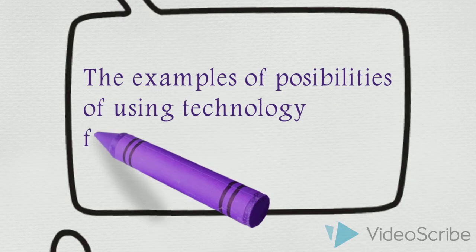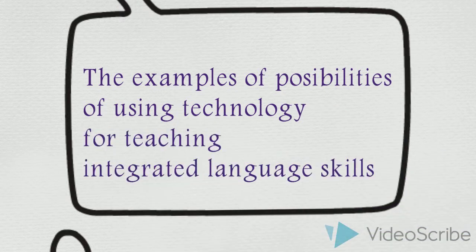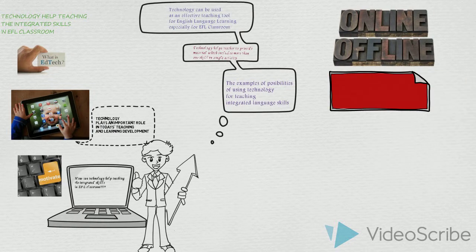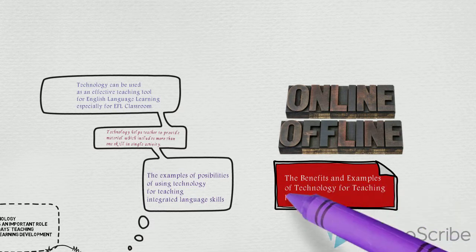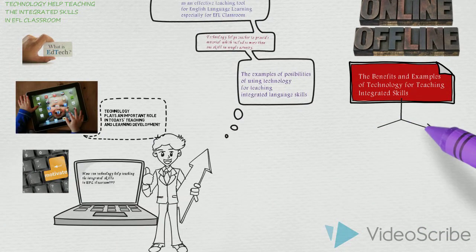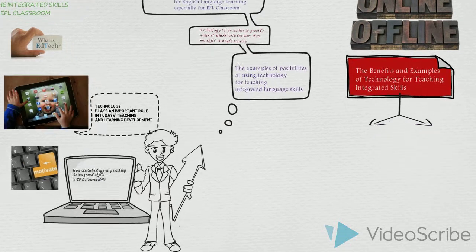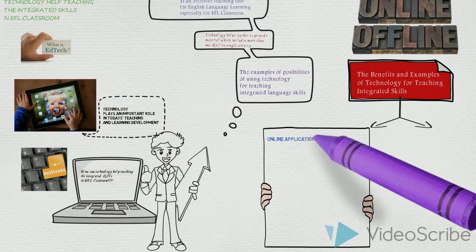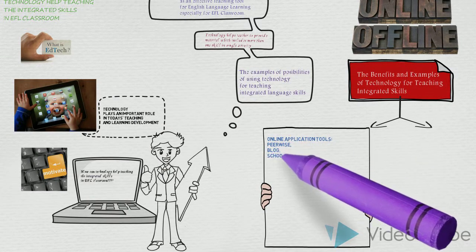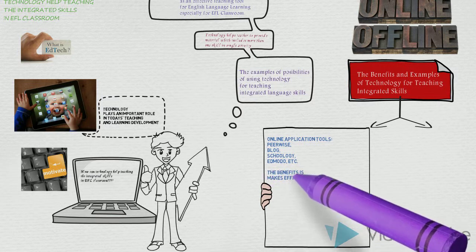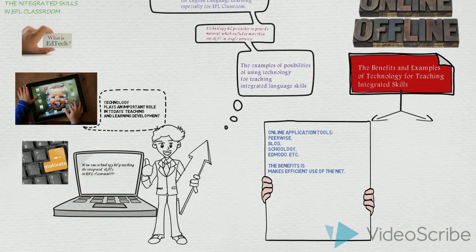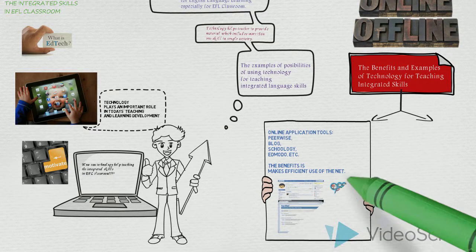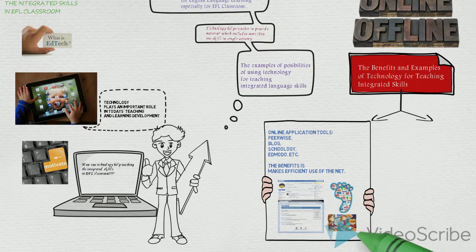The examples of the possibility of using technology for teaching integrated language skills include both online and offline application tools. For online application tools, examples include Hot Potatoes online, Peerwise, Schoology, and blogs, among others. The benefit of these tools is that they make efficient use of the internet. Those are the example pictures of online application tools.